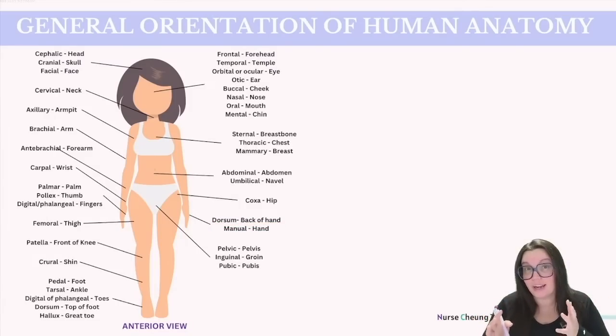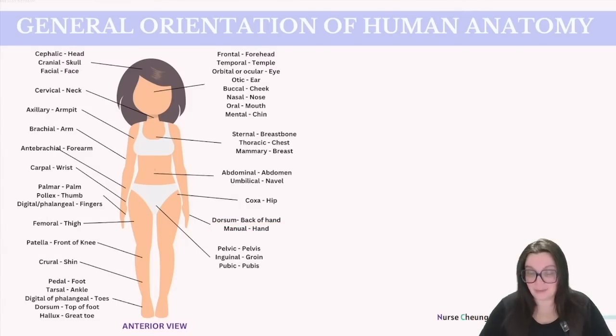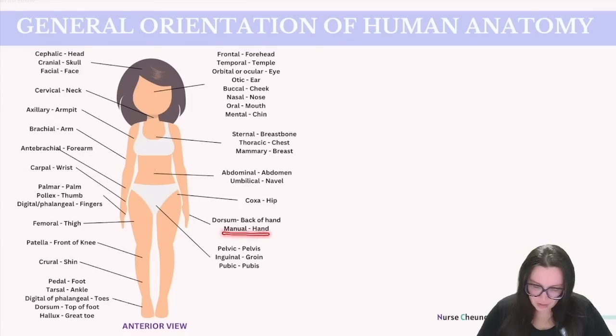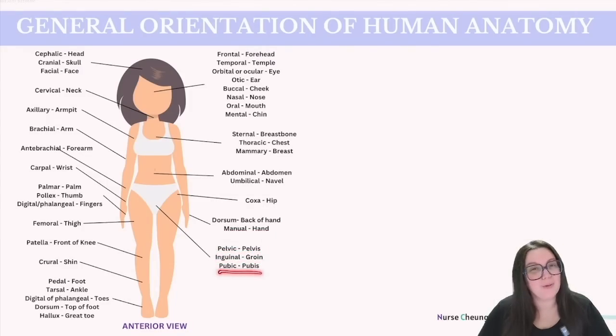Make sure you recognize that the dorsum can be the back of your hand and it can be the top of your foot. We have manual, which stands for our hand; pelvic for our pelvis; inguinal for our groin; and pubic for our pubis.